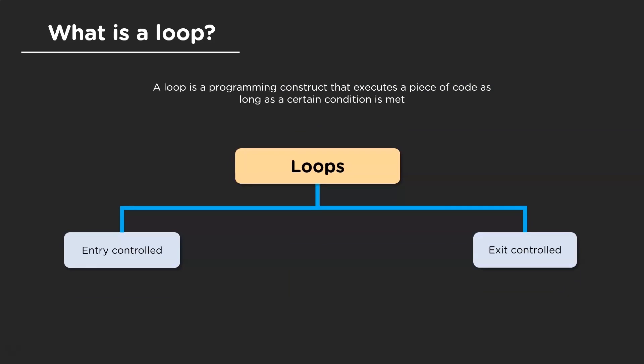We have entry control loops and exit control loops. Entry control loops are loops where the test condition is checked before executing the piece of code. For example, you have the for loop and the while loop. Before entering the loop, the condition is checked and only if the condition is met, it enters the loop and executes the code.